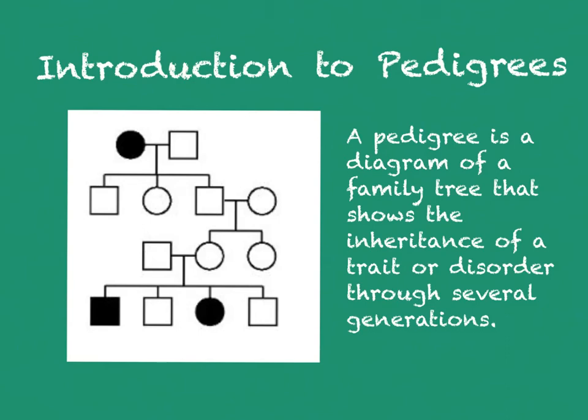Let's talk about pedigrees. A pedigree is a diagram of a family tree that shows the inheritance pattern of a trait or disorder through several generations. Pedigrees are used a lot in genetics to figure out the inheritance pattern of hereditary disorders.